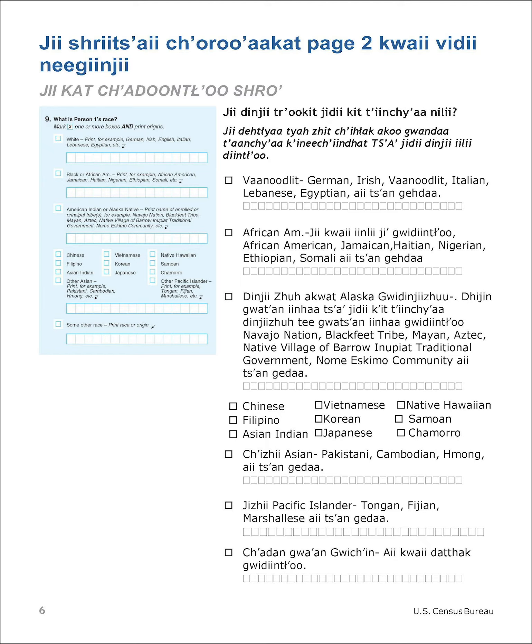Other Pacific Islander — print, for example: Tongan, Fijian, Marshallese, etc. Some other race — print race or origin.